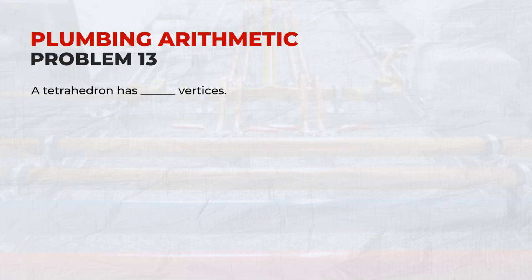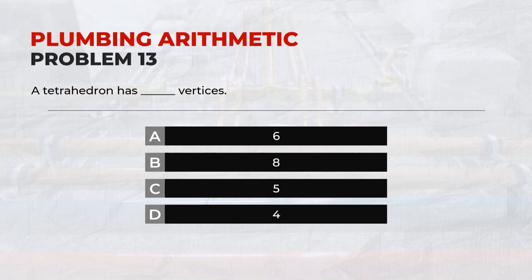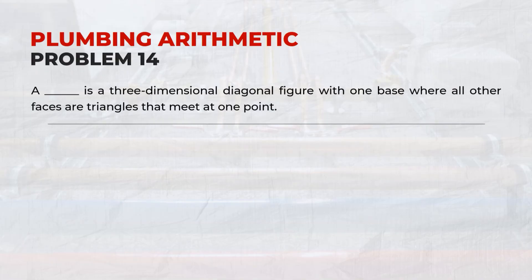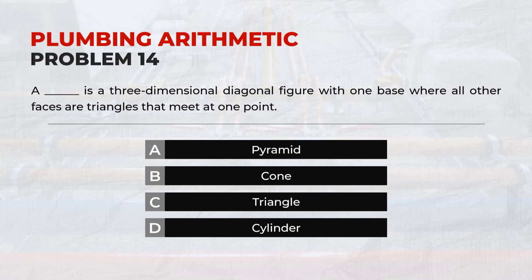Problem 13: A tetrahedron has vertices? Answer: D, 4. Problem 14: A pyramid is a three-dimensional diagonal figure with one base where all other faces are triangles that meet at one point.